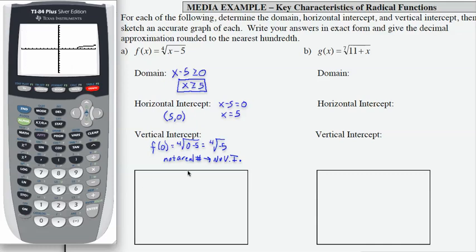So what I have is that my graph really starts at 5, 0 and then goes off to the right. This is 5, 0. This confirms what we found here that there was no vertical intercept. So this is f of x.